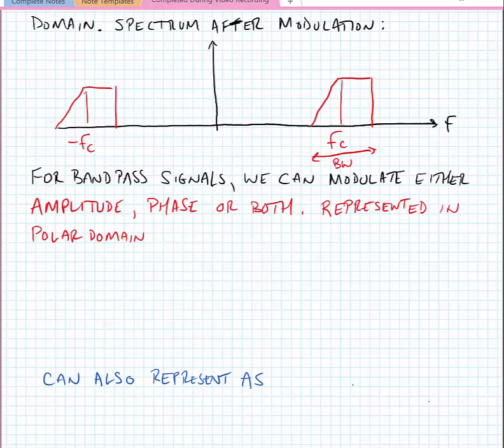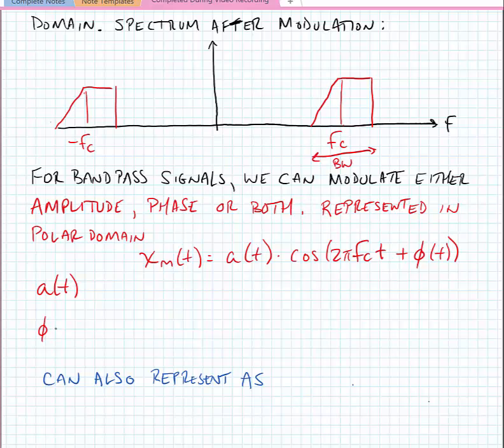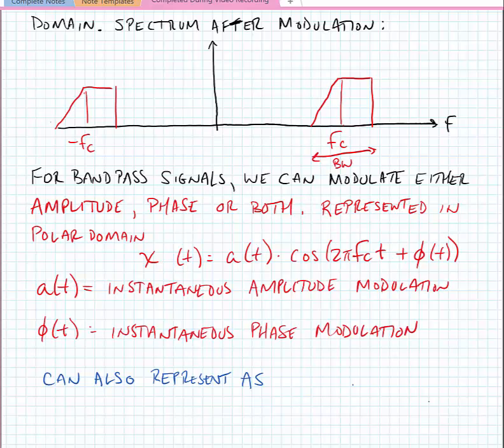We can represent this modulation of amplitude, phase, or both in the polar domain. We would say that our modulating signal xm(t) equals some a(t) times cosine of 2πfct plus φ(t). So a(t) is the instantaneous amplitude modulation and φ(t) is the instantaneous phase modulation and these represent information that we might be trying to transmit across the channel.